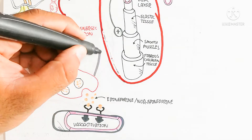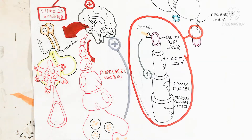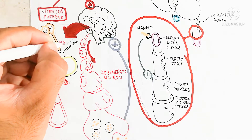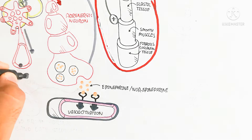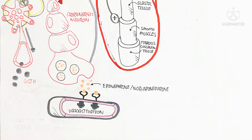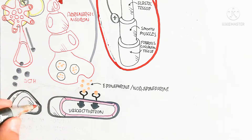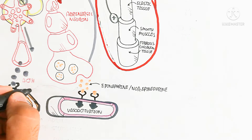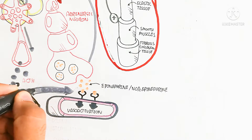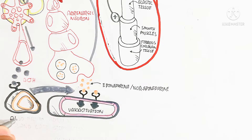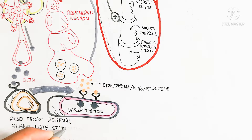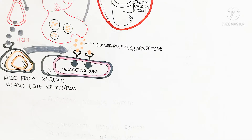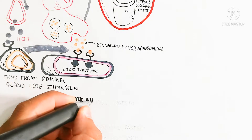Norepinephrine binding will lead to vasodilation. The cortisol hormone is also released from the adrenal gland when stimulated by the hypothalamus and neurosecretory cells, which create the adrenocorticotropic releasing factor to release ACTH. This is the late stimulation: after continuous sympathetic nervous system stimulus, epinephrine and norepinephrine increase from the adrenergic neuron.